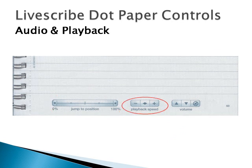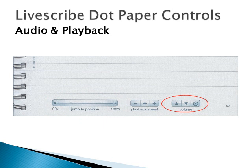The playback speed will allow you to slow down or speed up the recording, giving you time to enhance your notes or quickly review your notes at a faster audio speed. The volume options control the recorded audio either through the pen speaker or the headphones.